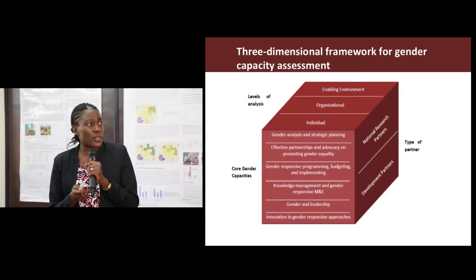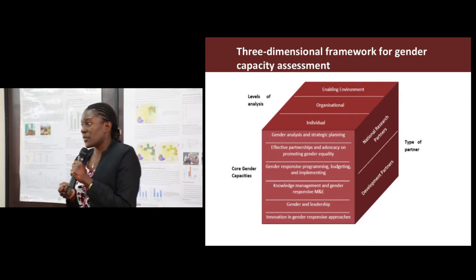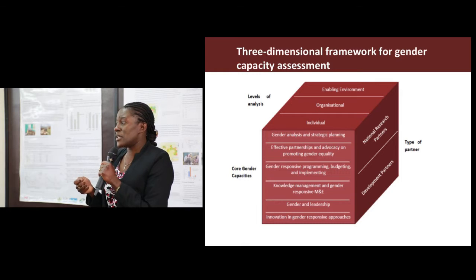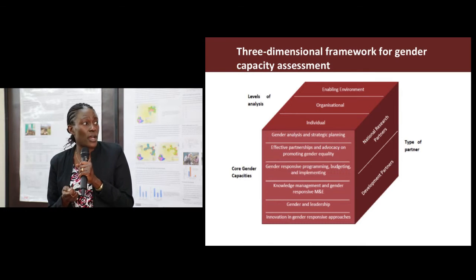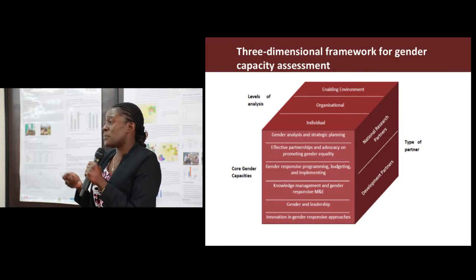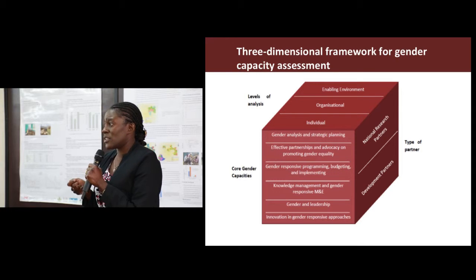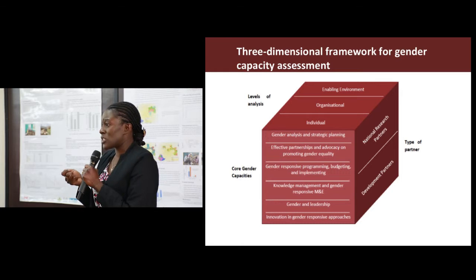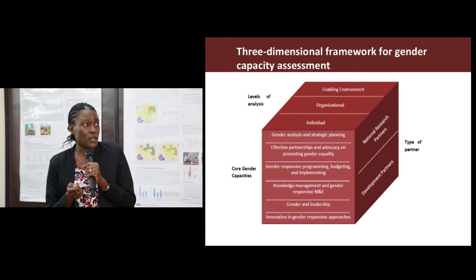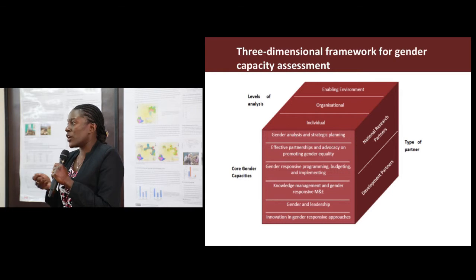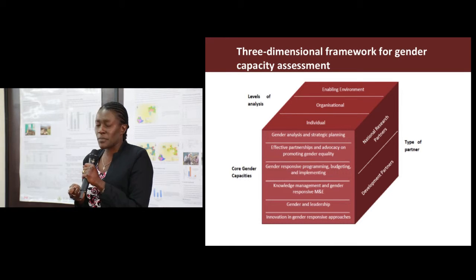The next core gender capacity is effective partnerships and advocacy on promoting gender equity. We don't work alone — we work with partners, and if we are to maximise impact, we need different partners who can help us deliver on this mandate. We assess the capacity to identify partners with the skills or resources to deliver on the gender mandate — the capacity to analyse gender, but also to ensure that interventions will increase men and women's access to and control of resources. Do these partners have the capacity or materials to advocate for gender equity or influence government to integrate gender in policies?